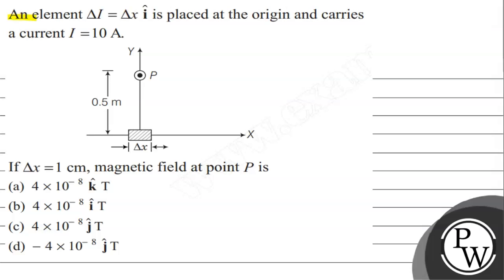The question says that an element Δl = Δx î is placed at the origin and carries a current I = 10 amperes. If Δx = 1 centimeter, we need to find the magnetic field at point P.